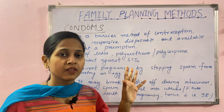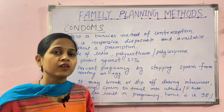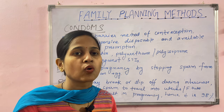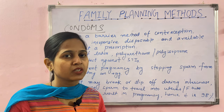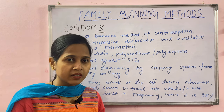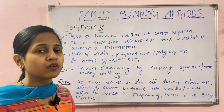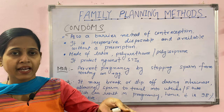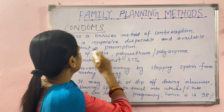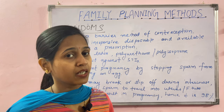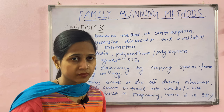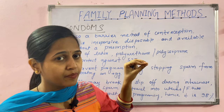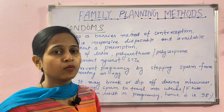The next method is the condom. This is also a barrier method of contraception. The condom is inexpensive, disposable, and available without a prescription, meaning it is available at a low price so that people in middle-income families can easily use it, and it does not require a doctor's prescription.